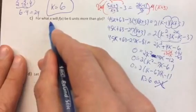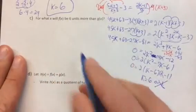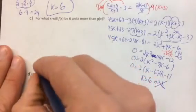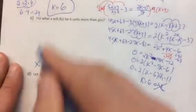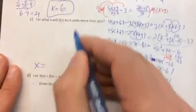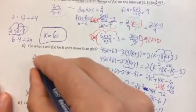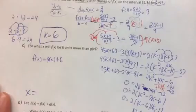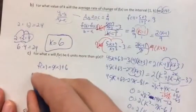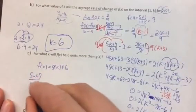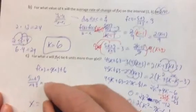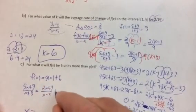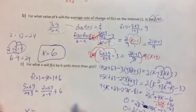For what x value will f of x be 6 more units than g of x? We want f of x to equal g of x plus 6 — this is just setting up an equation: 5x plus 7 divided by x plus 3 equals 2x plus 7 divided by x minus 4, plus 6. I'll let you solve it from there.